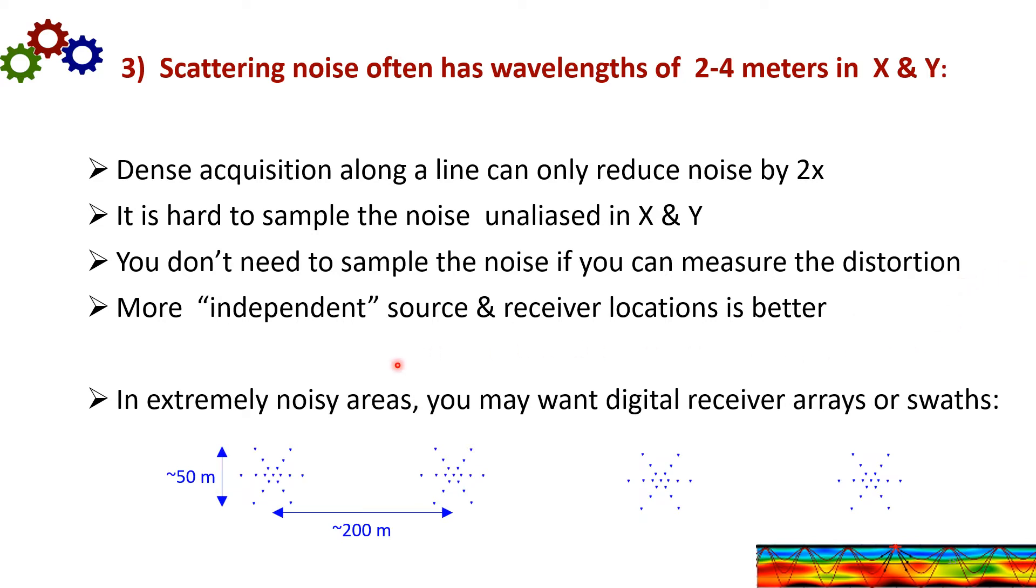Finally, in extremely noisy areas, you may want to use 2D digital receiver arrays or swaths, such as a wide line. Now you may say this goes against having more independent receiver locations, but actually what you really want is receiver locations that are mostly independent, but they still have some amount of correlation with their neighbors. You don't want to have totally random data because then you can't find any of the correlations.